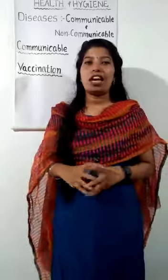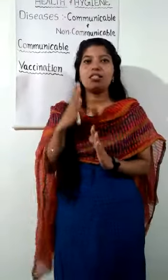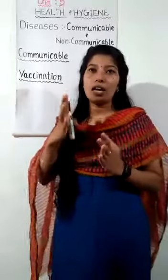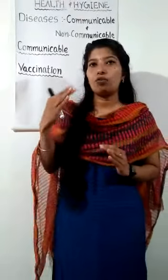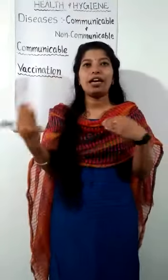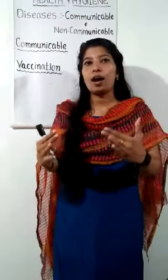That is typhoid — a type of communicable disease spread by contaminated food and water. Some insects like flies and cockroaches carry germs and contaminate food and water. Diseases like typhoid, cholera, diarrhea, and jaundice are caused by eating infected food or drinking polluted water.